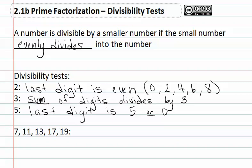Finally, for any prime number larger than 5, such as 7, 11, 13, 17, or 19, we need to use long division.